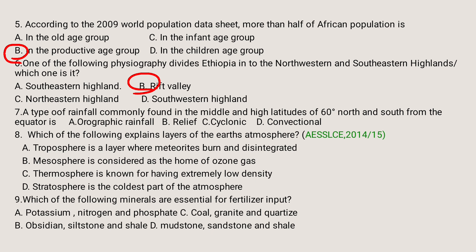Question number seven: A type of rainfall commonly found in the middle and high latitudes, 16 degrees north and south from the equator, is: A) Orographic rainfall, B) Relief rainfall, C) Cyclonic rainfall, D) Convectional rainfall. Cyclonic rainfall is the type of rainfall geographically found at middle and high latitudes, 16 degrees north and south from the equator. So the answer is C.